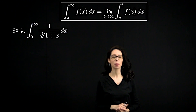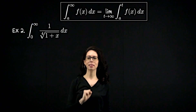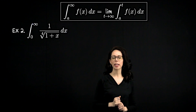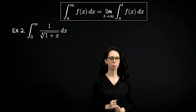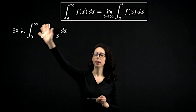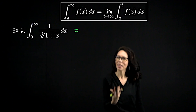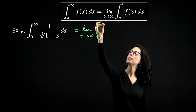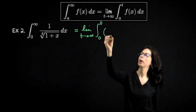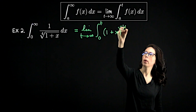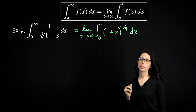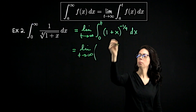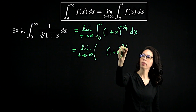For our second example, some aspects are similar to the first one — we are integrating over a domain that starts at a fixed number, in this case 0, and goes off to infinity. But this time the result is going to be a little different. We are trying to integrate from 0 to infinity the function 1 over the fourth root of (1+x). The first step is the same: rewrite as the limit as t goes to infinity from 0 to t of (1+x) to the negative 1/4 dx.